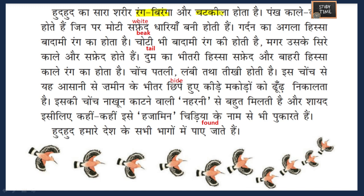The front part of the neck is badami rang - brownish in color. The beak is also brownish, but its head is black and white. Dariya means stripes - so the black feathers have white stripes on them.